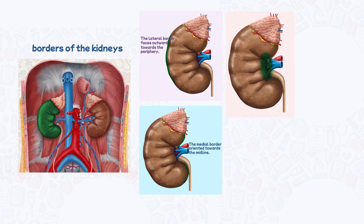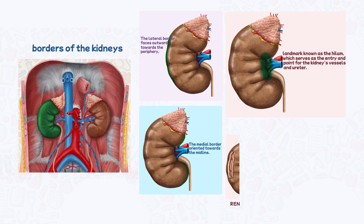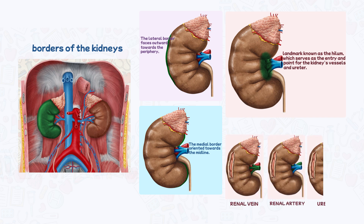The medial border features a crucial landmark known as the hilum, which serves as the entry and exit point for the kidney's vessels and ureter. Internal anatomy: the kidney's parenchyma comprises the outer renal cortex and the inner renal medulla.